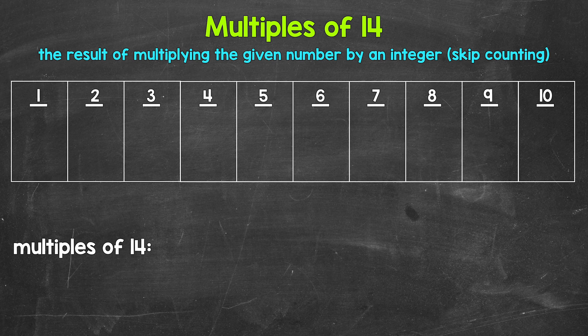Another way to think about multiples is to skip count. So all of the numbers something is going to hit when counting up by that number, those are all going to be multiples.